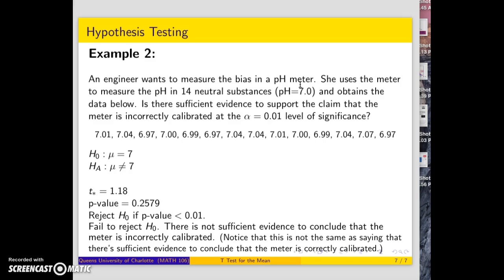The alternative hypothesis is μ ≠ 7, and the null hypothesis is μ = 7. Using StatCrunch, we get t = 1.118 and p-value = 0.2579.